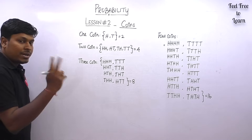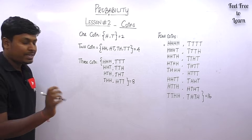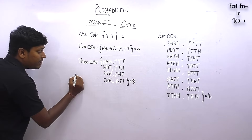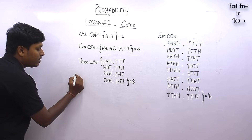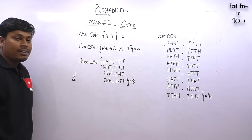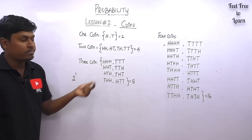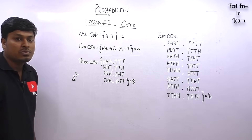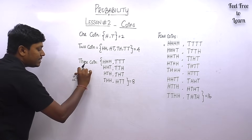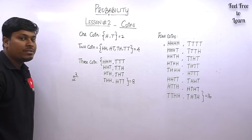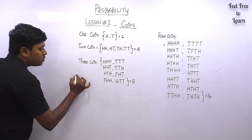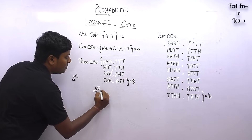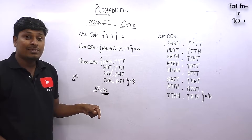The formula is 2 to the power of n, where the power denotes how many coins are being tossed. For one coin: 2 power 1 = 2. For two coins: 2 power 2 = 4. For three coins: 2 power 3 = 8. For four coins: 2 power 4 = 16. For five coins: 2 power 5 = 32.